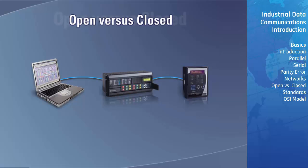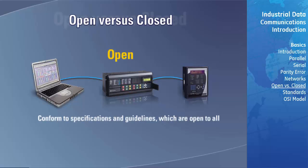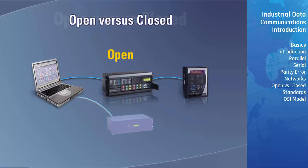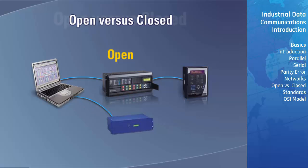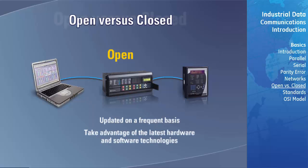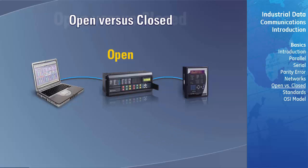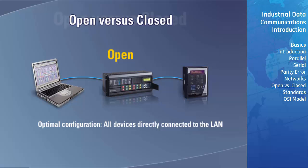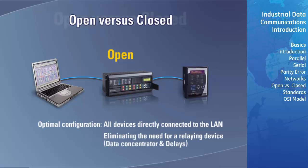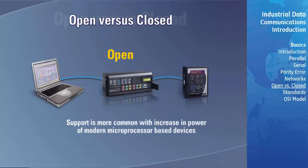Open systems are communication networks that conform to specifications and guidelines which are open to all. This allows equipment from any manufacturer who claims to comply with a particular standard to be used interchangeably on the network, providing end users with many choices of equipment suppliers. The network standard being open tends to be updated frequently to take advantage of the latest, widely available, and cost-effective hardware and software technologies. The optimal configuration would have all devices directly connected to the LAN, eliminating the need for a data concentrator and its associated delays. The support of high-speed LAN interfaces is now more common with the increase in power of modern microprocessor-based devices.